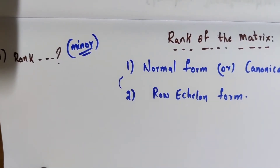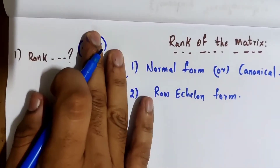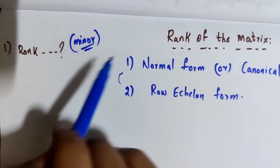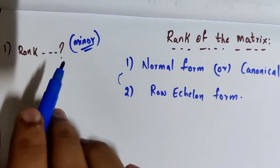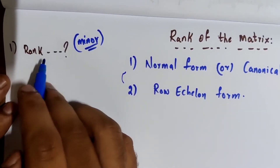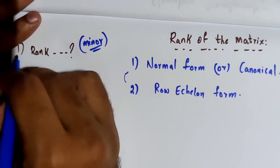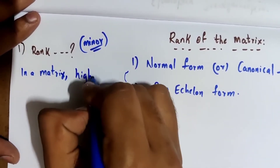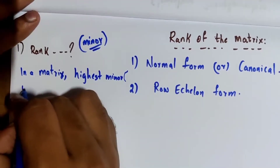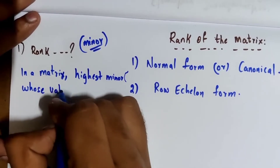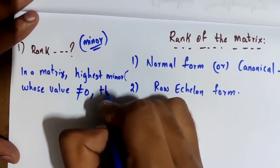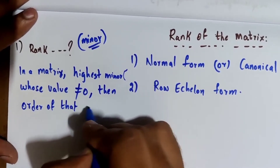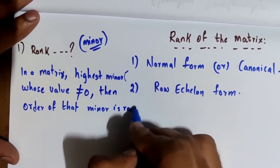So what does rank mean? In a matrix, the highest order minor whose value is not equal to zero — the order of that minor is the rank.